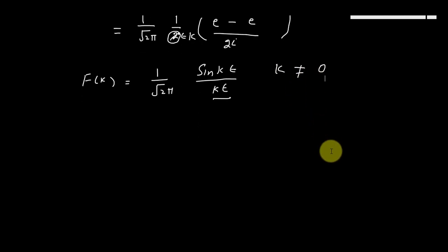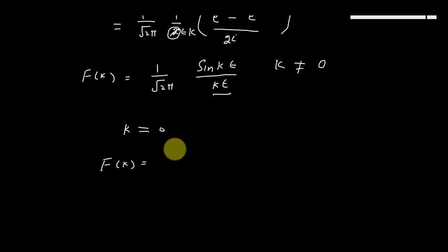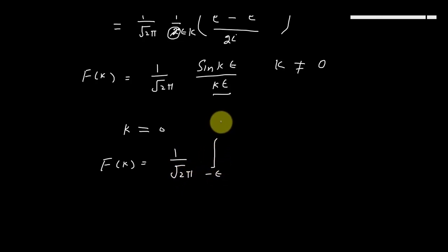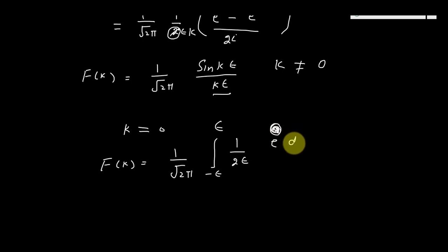If k = 0, then the Fourier transform will become equal to f(k) = 1/√(2π) integration from minus epsilon to plus epsilon of (1/(2ε)) × e^(i×0×x) dx. چونکہ k کی جگہ 0 آ گیا، تو exponent 0 بن جاتا ہے۔